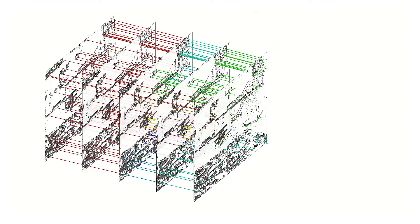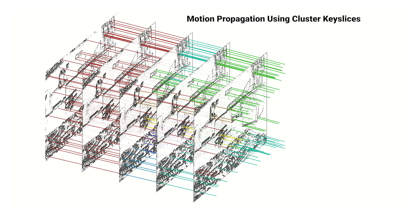To speed up computations, we propagate the motion models until a cluster key slice is invoked, which occurs during abrupt motion changes.